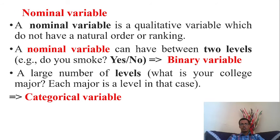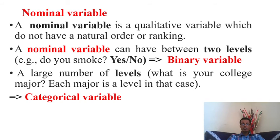A nominal variable can have between two levels. For example: 'Do you smoke?' — yes or no. There is no natural order between yes and no, so it is a binary nominal variable. Alternatively, with a larger number of categories — such as college major: Business and Economics, Accounting, Management, or Public Administration — there is no natural order among these categories, so it is called a categorical nominal variable.